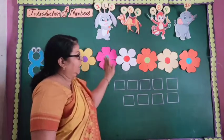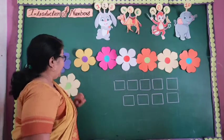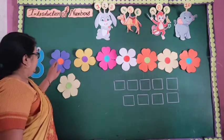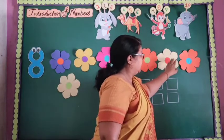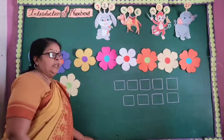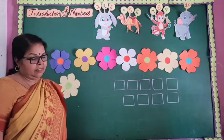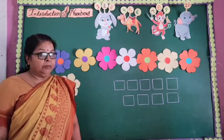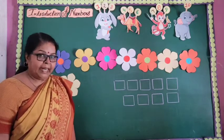Here are given many flowers. So let's count — how many flowers are there? 1, 2, 3, 4, 5, 6, 7, 8. Here are 8 flowers. Now how do you write number 8? So let's start.